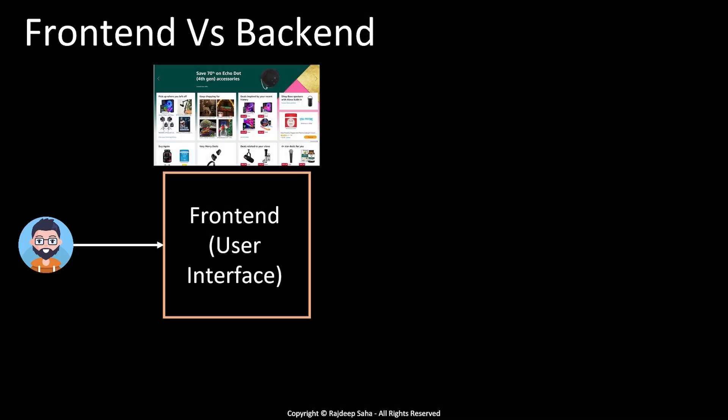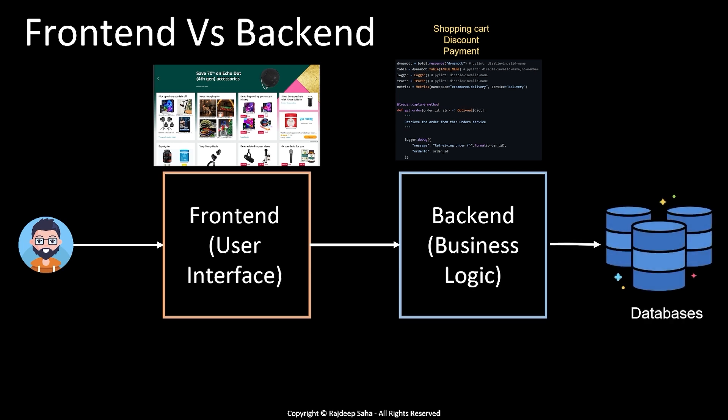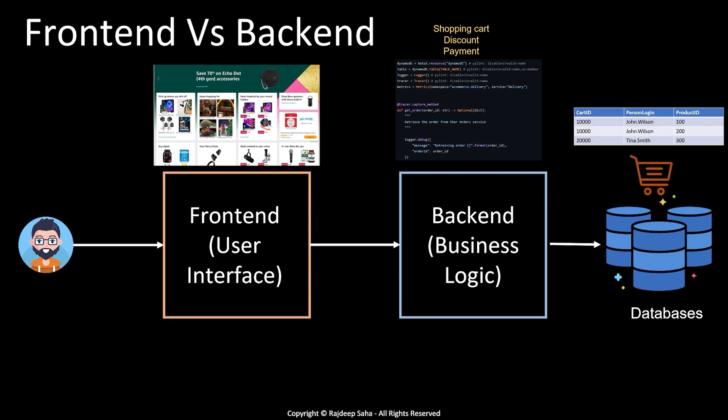So front-end is the user interface — such as the amazon.com website, the way it's laid out, text messages, etc. The back-end has all the business logic, such as adding something to a shopping cart, applying a discount, doing payment processing, etc. Back-end interacts with the database, which holds all the information such as price of an item, shopping cart information, etc. The shopping cart will actually be a table in the database with a shopping cart ID, your login, and the product ID signifying what you are trying to buy.